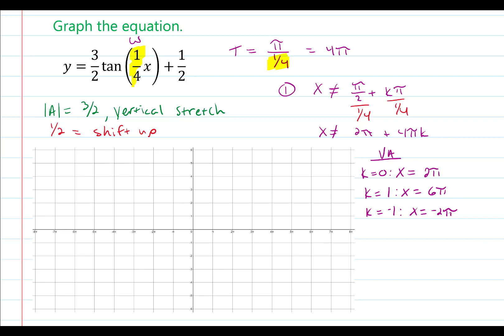I'm now going to plot these vertical asymptotes onto the coordinate plane using vertical dashed lines at two pi, negative two pi, and six pi. From here, I would like to plot our points given the horizontal stretch, but without the vertical stretch or the shift up. Recalling what I said earlier, the x-intercepts are the midpoint, and then the other two points are up one and down one from the x-intercepts — these three critical points for each curve.